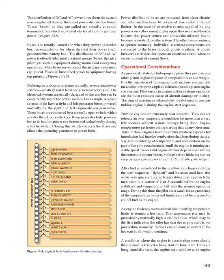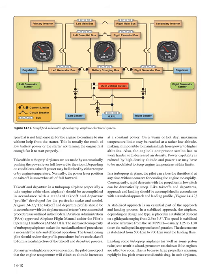A condition where the engine accelerates more slowly than normal is termed a hung start or false start. During a hung start, the engine may stabilize at an RPM not high enough for the engine to continue running without help from the starter, usually the result of low battery power. Takeoffs in turboprop airplanes are not made by automatically pushing the power lever full forward to the stops. Depending on conditions, takeoff power may be limited by either torque or engine temperature, and the power lever position is typically somewhat short of full forward. Takeoff and departure, especially in a twin-engine cabin class airplane, should be accomplished in accordance with a standard takeoff and departure profile for the particular make and model, as outlined in the FAA-approved airplane flight manual (AFM/POH). The transitioning pilot should review the profile procedures before each takeoff to form a mental picture of the takeoff and departure process.